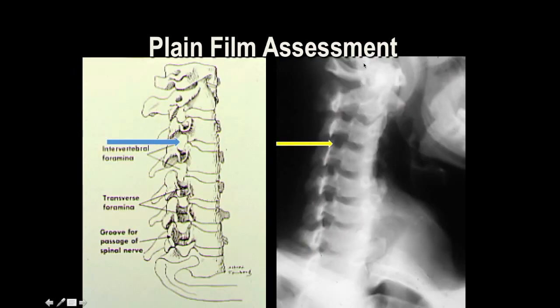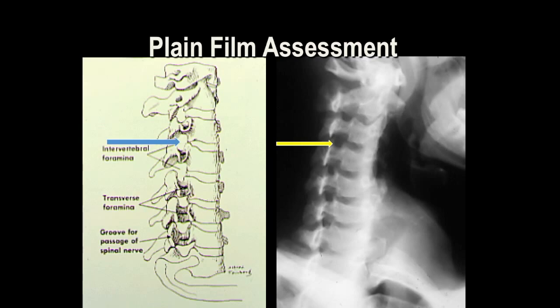Here we have the neural foramina showing nice open spaces, so we can predict the nerve is exiting without compression. In the event of a fracture or severe degenerative disease, there could be obliteration of this area, leading us to suspect that the patient's neuropathic symptoms are coming from this region. The schematic on the left represents the same thing — the neural foramina from the cervical spine.